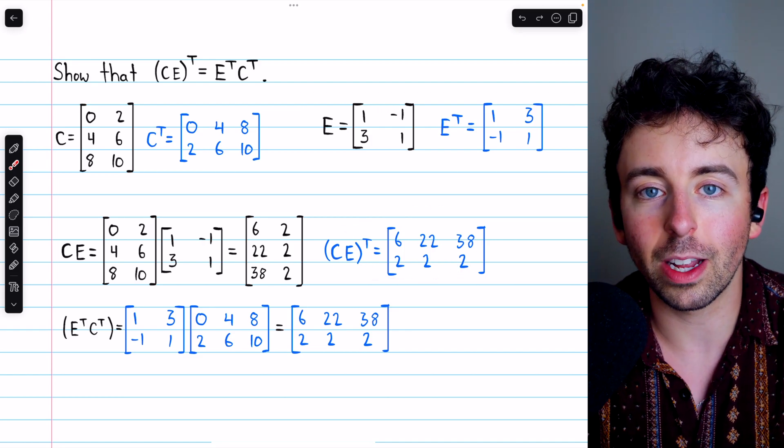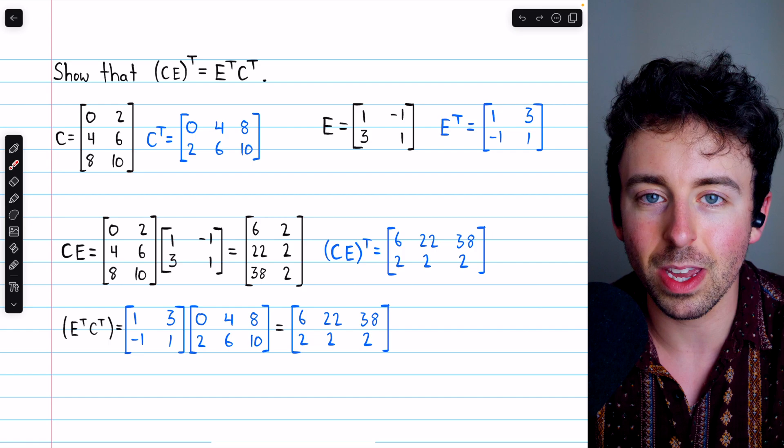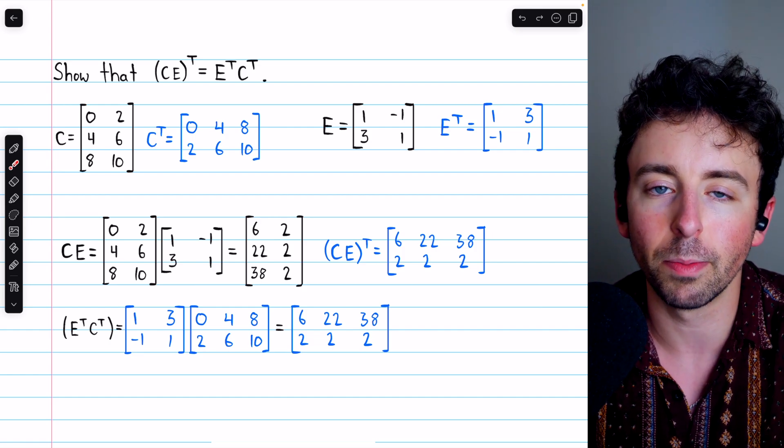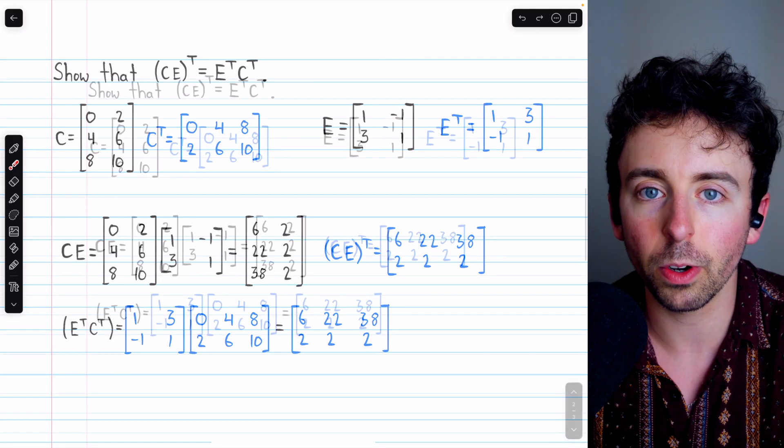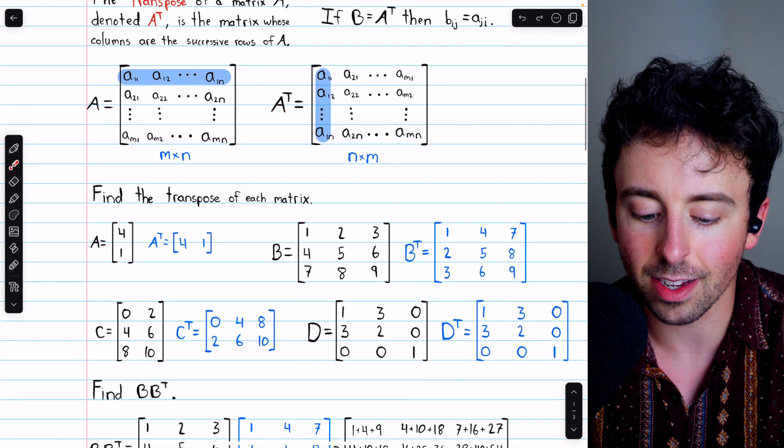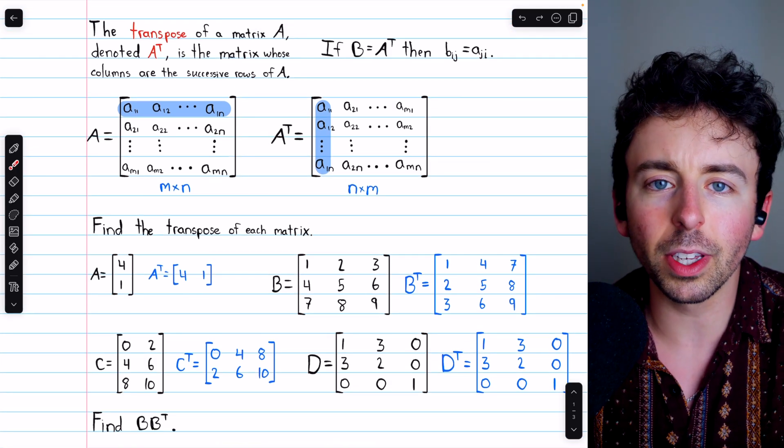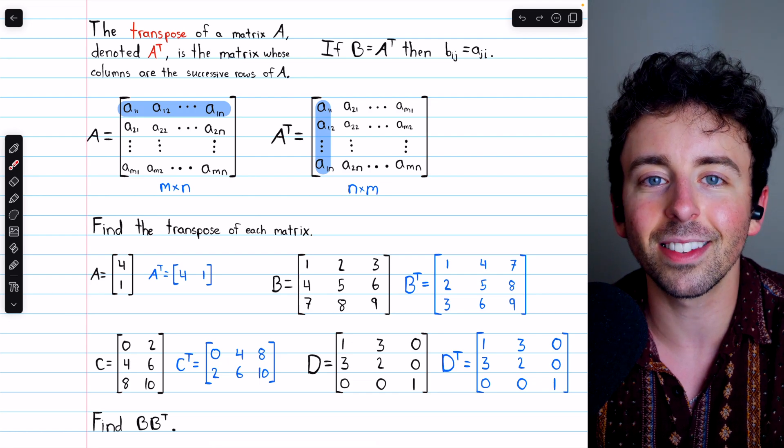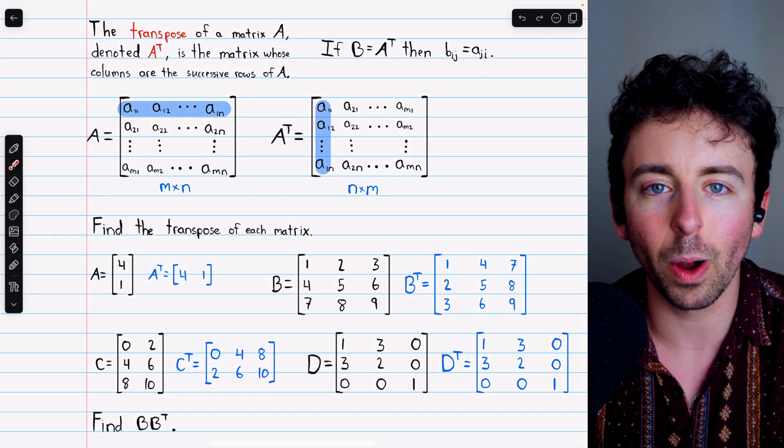So how do you find the transpose of a matrix product AB? Well, you take B transpose times A transpose, so transpose of the component matrices, and swap the order. So that's what the transpose of a matrix is, how to find it, and some interesting examples and properties. Let me know in the comments if you have any questions, and be sure to check out my linear algebra course and linear algebra exercises playlists in the description for more. Thanks for watching.